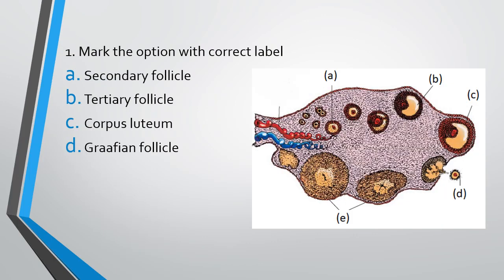Question number 1. Mark the option with correct label. A, B, C, D, E are five labels given in the diagram. You have to mark the option that is correct with the label. A represents secondary follicle, B represents tertiary follicle, C represents corpus luteum, D represents Graafian follicle. Which of the options is correctly representing the label?